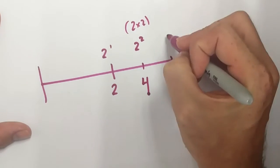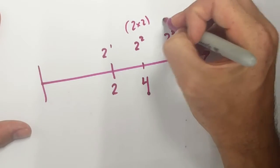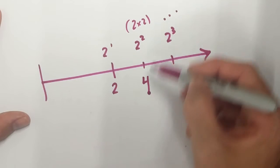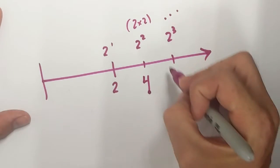If I go on to the next one, 2 to the power of 3, well, I know that's 2 times 2 times 2. Or I can just take my 2 times 2, which is 4, and then times it by 2 again, which is 8.